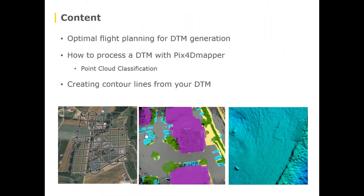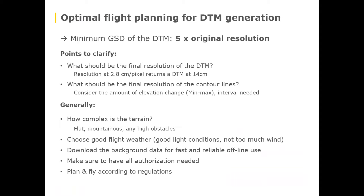In terms of content we'll start on the flight planning side — what you need to consider if your final output is supposed to be a DTM. A digital terrain model generated with Pix4D Mapper has a minimum resolution of five times the original resolution. So your first question should be: what resolution do I need on my DTM? If that is 14 centimeters, you need to fly at 2.8 centimeters per pixel, which is around 120 meters from the ground or 400 feet with the eBee Plus and the Soda camera.